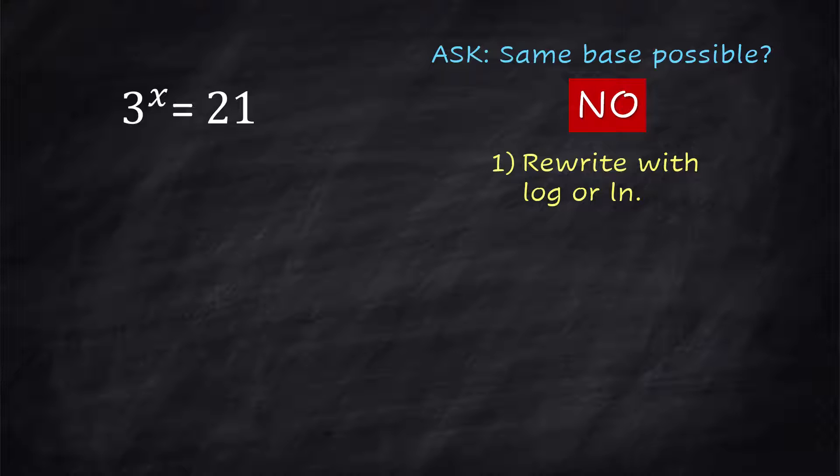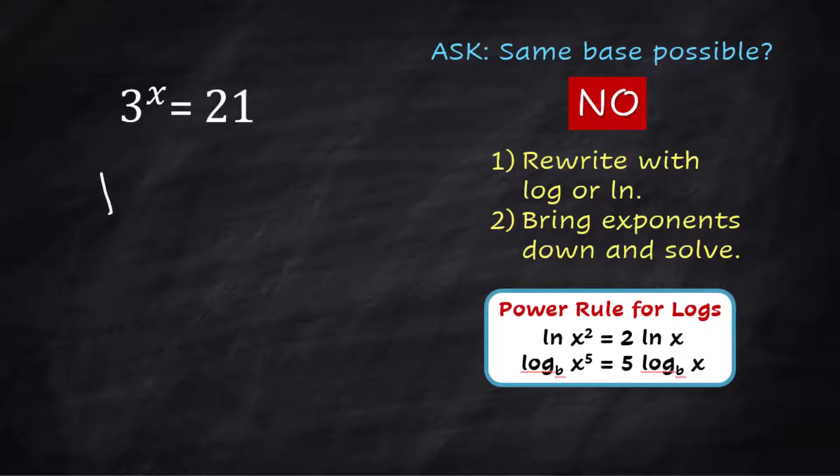The first thing we're going to do is rewrite this using our logs. We're going to take the log of both sides, then use log properties to bring those exponents down and solve. I like to use natural log because it's two letters. ln(3^x) = ln(21).